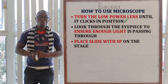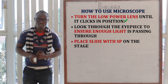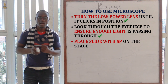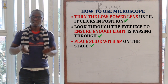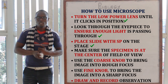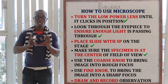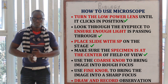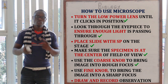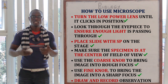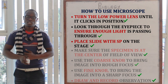To use the microscope: first, turn the low-power objective lens until it clicks into position. Then look through the eyepiece to ensure enough light is passing through. Place the slide containing the specimen on the stage and ensure the specimen is at the center of the field of view. Use the coarse adjustment knob to bring the image into rough focus, then use the fine adjustment knob to bring it into sharp focus. Finally, draw and record your observations.